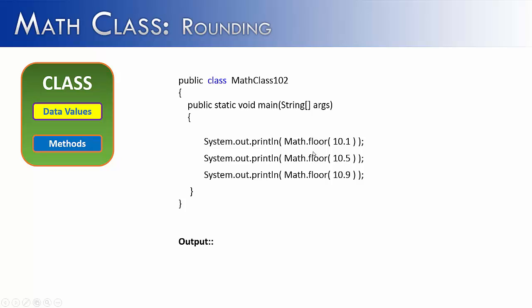The first one is floor. What floor does is it rounds down to the nearest whole number. 10.1, 10.5, and 10.9 would all give us 10. Even though this is close to 11, it would still round down to 10.